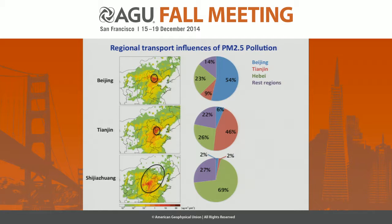Any other questions? Yes — how do you distinguish the source type? The source type distinction heavily relies on bottom-up estimates. The bottom-up emission inventory provides sources from different sectors, and that sector information is coming from the bottom-up emissions, with separate contributions attributed to different sectors.